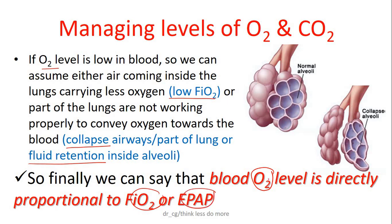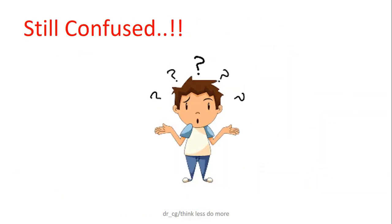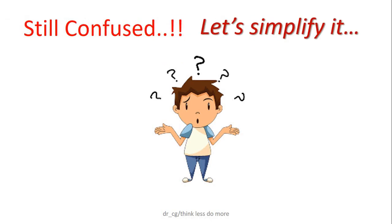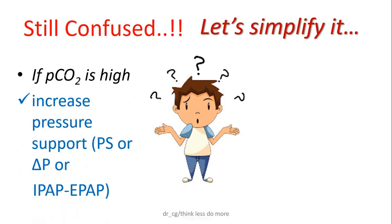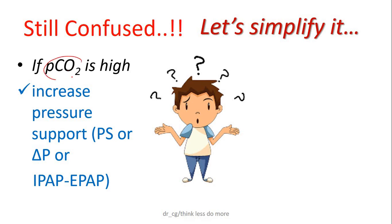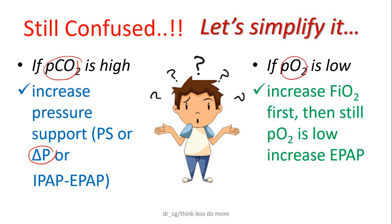This is also very important: level of blood O2 is directly proportional to FiO2 and also directly proportional to EPAP. If you are confused with all these theoretical aspects, just remember two simple things. First, if CO2 is high, increase your pressure difference. And second, if O2 is low, first increase FiO2 up to 60%, and if O2 is still low, increase your EPAP.